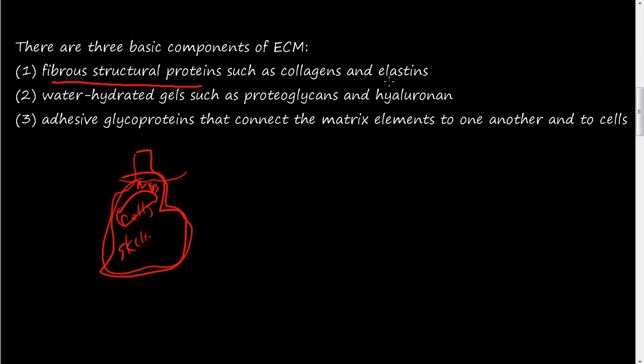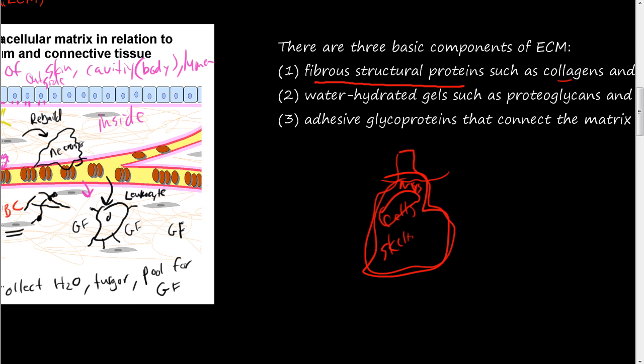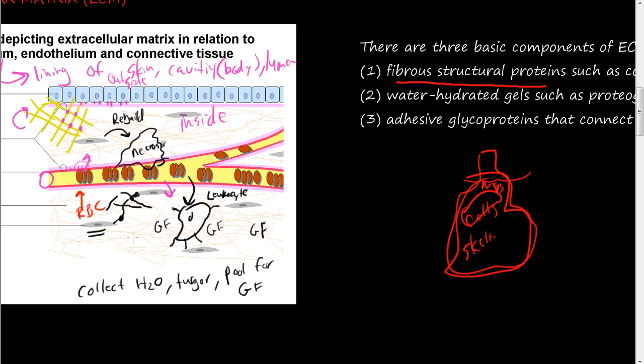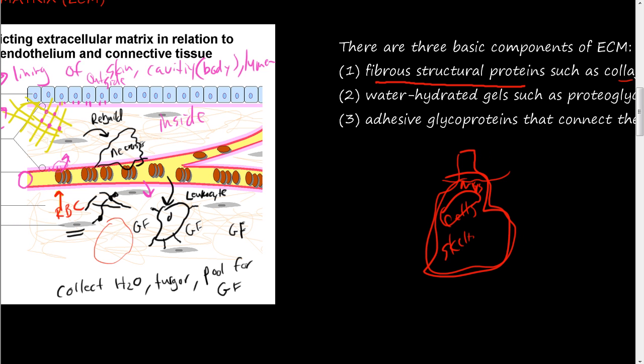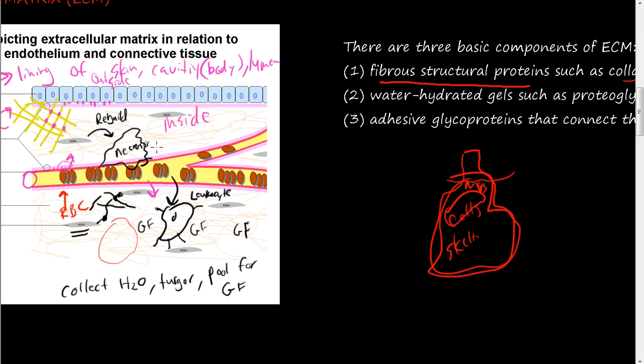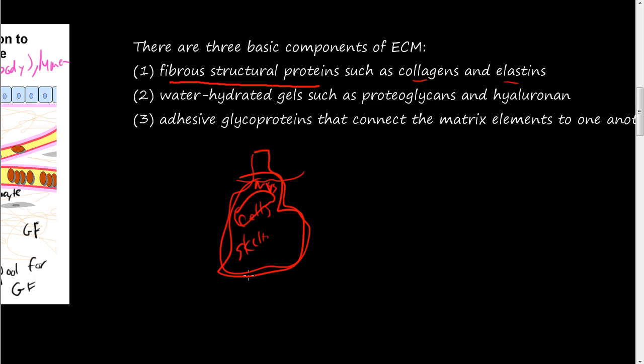So these fibrous structural proteins really give us this three-dimensional shape along with bones, for us to be us and to have this three-dimensional shape. And collagen and elastins are the primary structural proteins. And we'll talk about collagen and elastins and all these elements of the extracellular matrix in great detail. Now the second type is these water-hydrated gels. And they make up this interstitial matrix here. And remember that's a gel, it's not a fluid, it's not like water or it's not like a solid, it's a gel. And these are proteoglycans and hyaluronan.